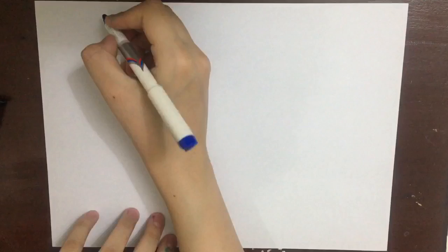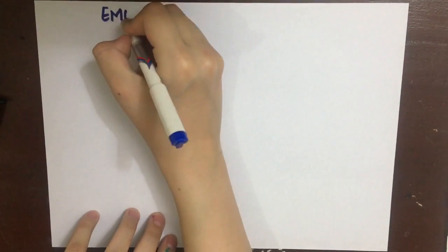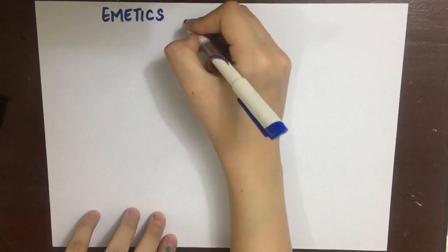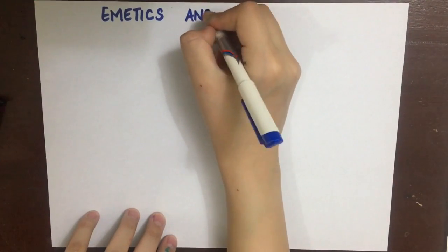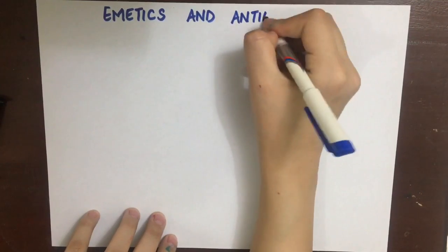Before studying emetics and antiemetics, you need to understand that vomiting is not always something bad that you need to suppress. But in cases where vomiting is a symptom of an altered function in the body, then we need to suppress it, or sometimes we even need to induce it, and that's why we use emetics.